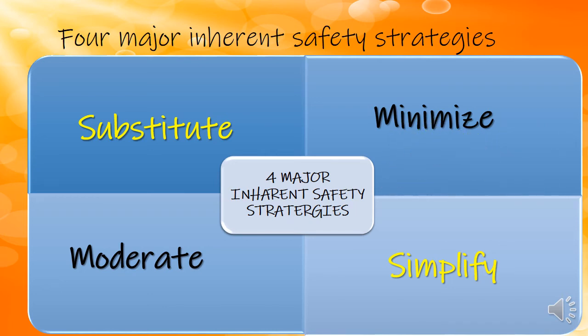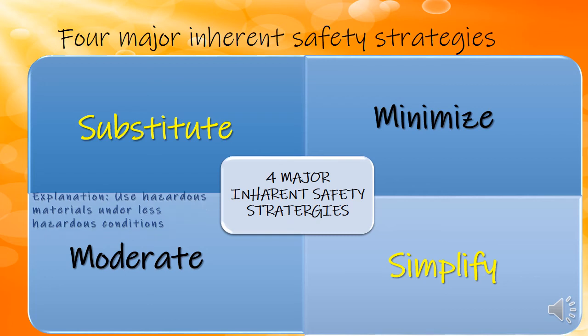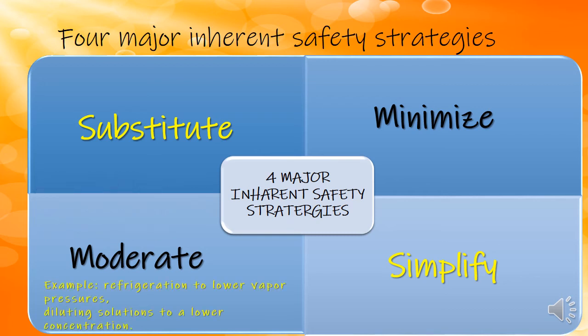The next one is moderate. Moderate is a method that uses hazardous material under less hazardous conditions. For example, refrigeration to lower vapor pressure to overcome high pressure, or diluting a solution to a lower concentration — for example, to reduce its acidity.